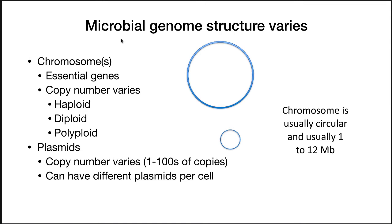Microbial genome structure varies. Some will have only a single chromosome; others will have several chromosomes and a number of different plasmids. Chromosomes have essential genes — like RNA polymerase and ribosome genes — and you cannot survive without this piece of DNA. Copy numbers vary between organisms: you can have haploid, meaning one copy, or diploid and polyploid, which is more commonly seen in eukaryotic genomes. Plasmids carry non-essential genes — you can lose the plasmid and the organism can still survive and grow. Copy numbers vary from one to hundreds of copies and you can have different plasmids per cell.